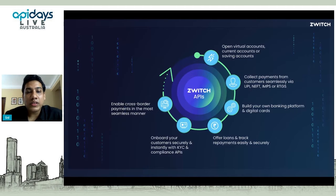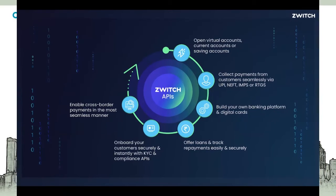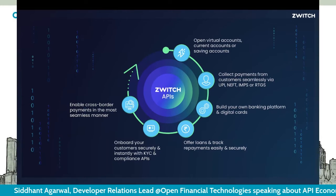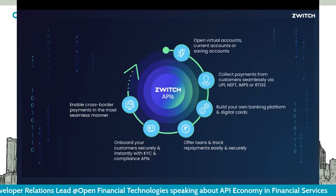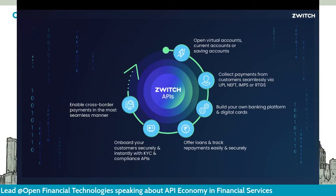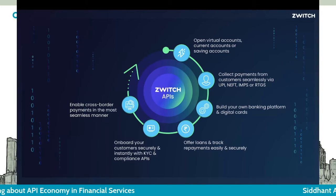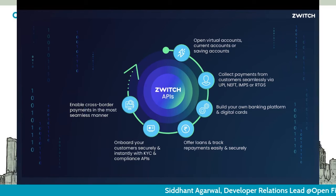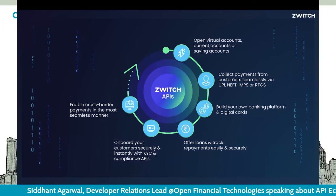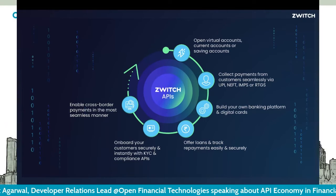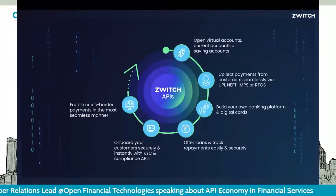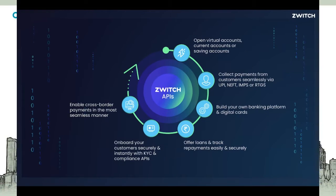With Switch APIs, businesses can open virtual accounts, open current accounts or savings accounts for their customers on the go. They can collect payments seamlessly via UPI, NEFT, IMPS, or RTGS. They can reconcile incoming payments from multiple customers. You can validate KYC — like PAN or Aadhaar, which is the unique ID in India — and get bank account details of a customer instantly, and much more.